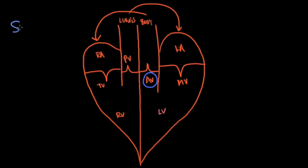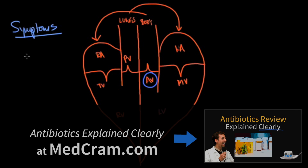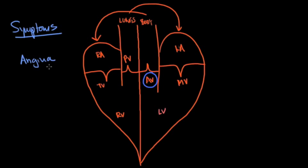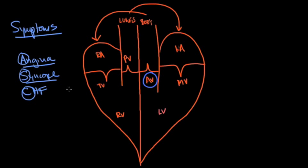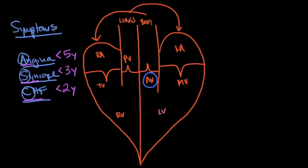Three key symptoms of aortic stenosis are angina, syncope, and congestive heart failure — and their order reflects severity. A study found that patients with angina have less than five years of life expectancy; those with syncope have less than three years; and those with congestive heart failure have less than two years. Knowing this order is potentially testable information.